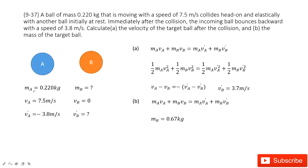The initial mass for A is given. Mass B is unknown. And the initial velocity for A and B is given.